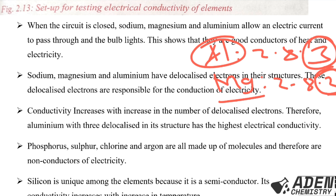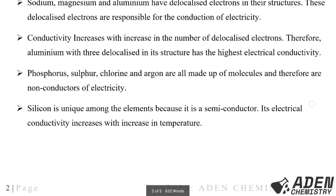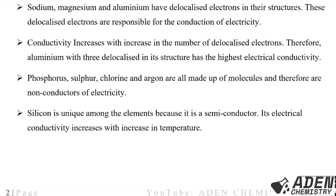Magnesium has higher electrical conductivity than sodium because magnesium has more localized electrons than sodium. However, elements in the same group — for example, magnesium and calcium — have the same electrical conductivity because they have the same number of localized electrons. Phosphorus, sulfur, chlorine, and argon are all made up of molecules and are therefore non-conductors of electricity because they lack localized electrons in their structure.